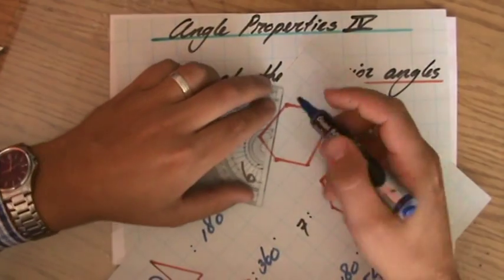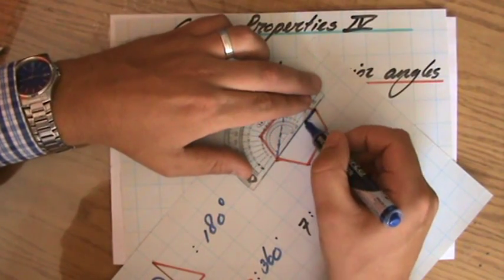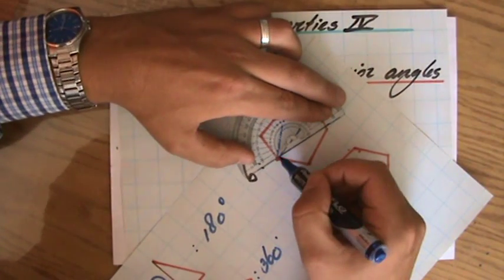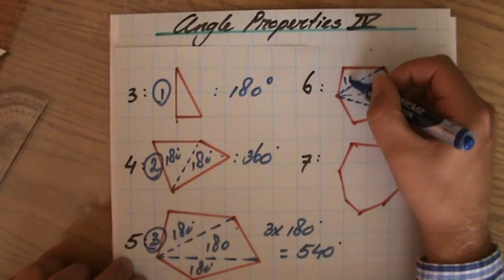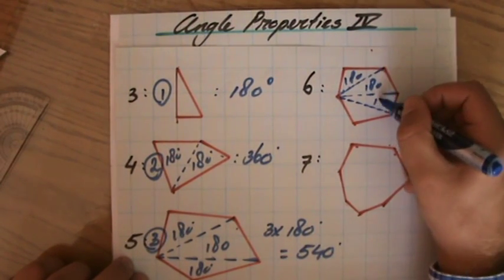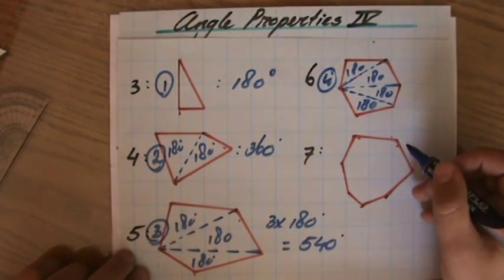Let's go to the hexagon. How many triangles can I create? Now, that is one, and two, and another line. So, one, two, three, four triangles, as you can see.